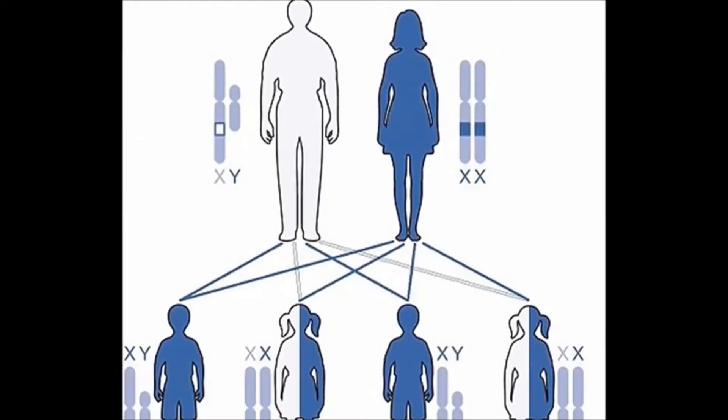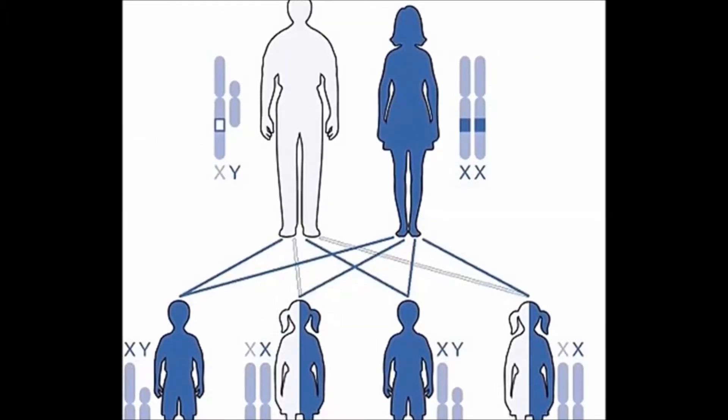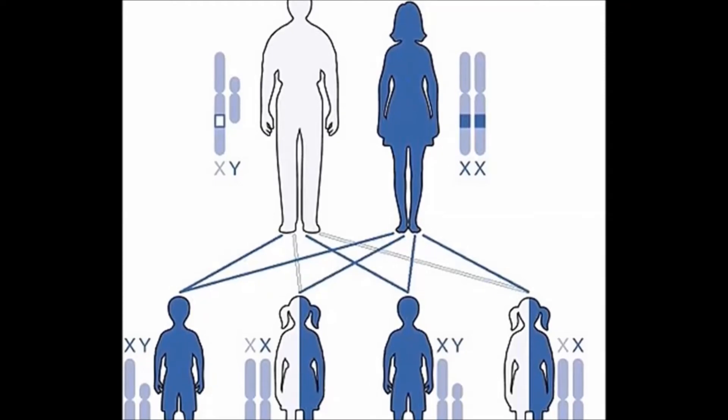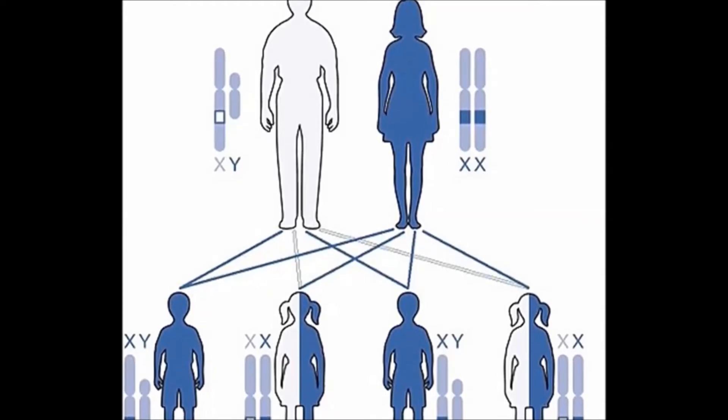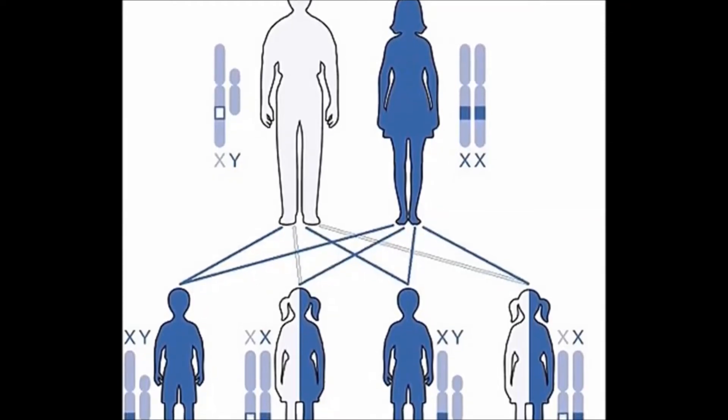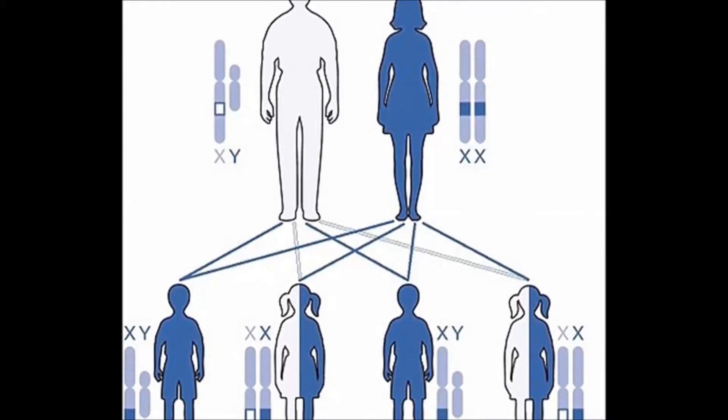In most cases, MeCP2 duplication syndrome is inherited from a mother who has a duplication, but does not have any obvious symptoms. If the mother has a duplication, she has a 50% chance of passing it on to her children.